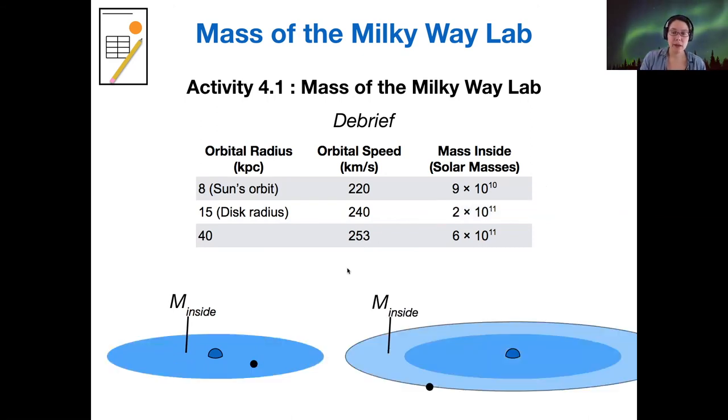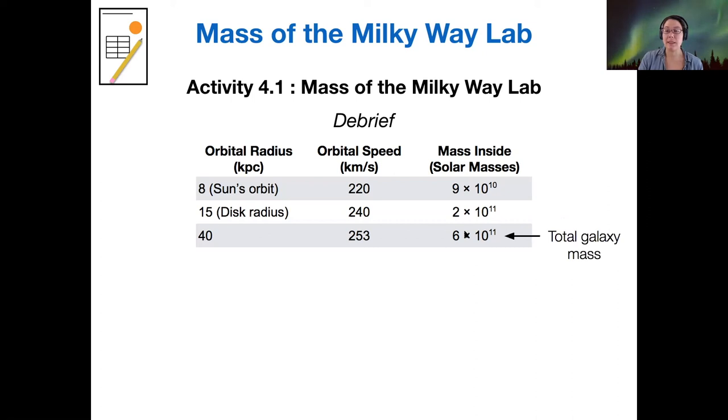And likewise, if we look out at 40 kiloparsecs, then that number 6 times 10 to the 11 solar masses includes everything inside of it already. And so you would not want to add all of these up to get the total mass of the galaxy. Instead, you would just assume that this 6 times 10 to the 11 solar masses is the total galaxy mass.